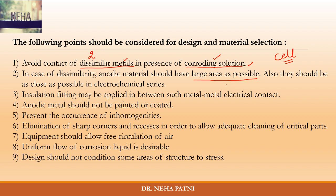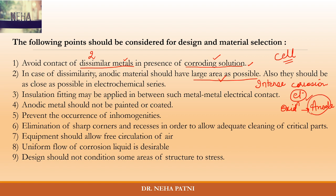If you have no option but to use two dissimilar metals, make sure the anodic metal has as large an area as possible. A small anodic area results in intense corrosion because the cathodic area is large, the electron demand is high, and oxidation — which occurs at the anode — must supply those electrons. So the anodic area must be large to reduce corrosion intensity.